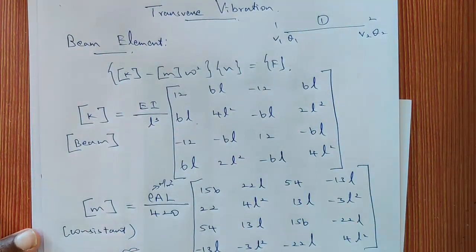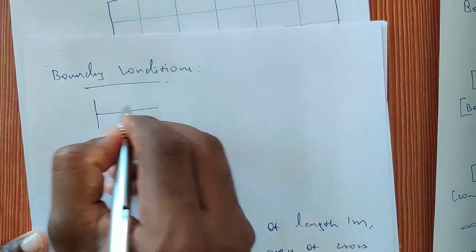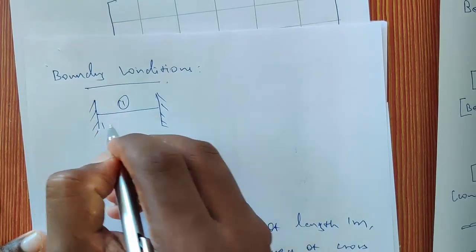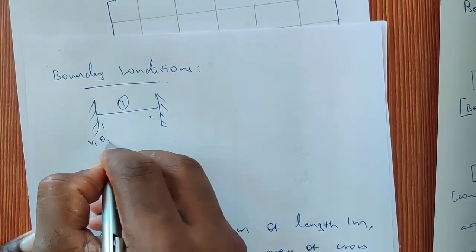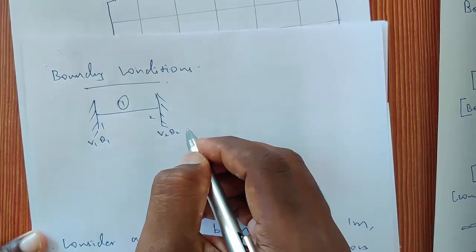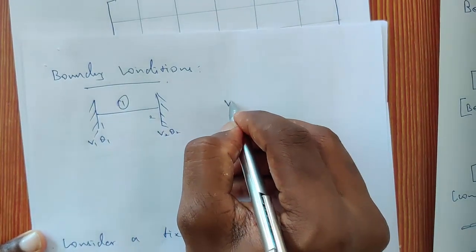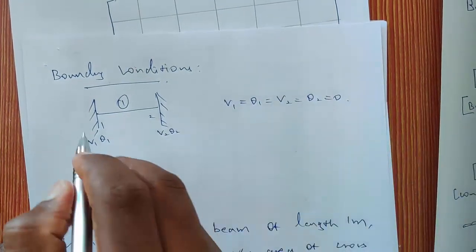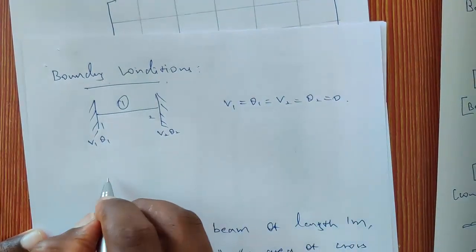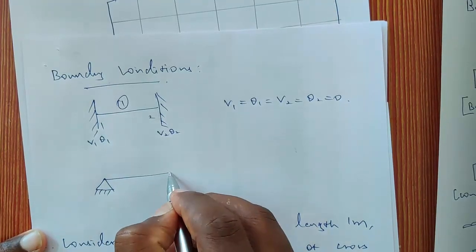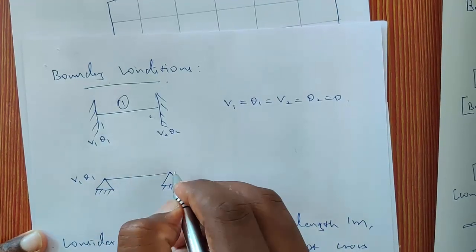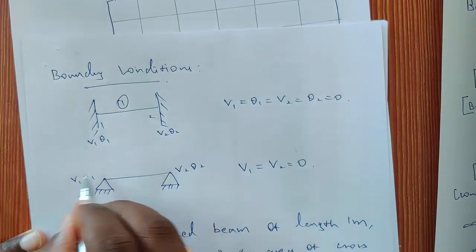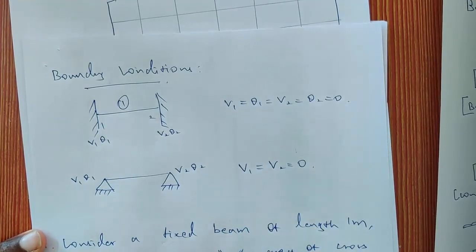These are all the basics about the beam element. Mostly we may have a fixed beam. If the beam is fixed, consider this as element number 1 with node 1 and node 2. At node 1 it has V1 and θ1; at node 2 it has V2 and θ2. If the beam is fixed at both ends, then V1 = θ1 = V2 = θ2 = 0, meaning both displacement and rotation are zero. If the beam is simply supported, then the vertical displacement is equal to zero but it may have rotation.